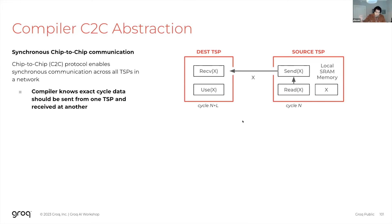A useful compiler abstraction for chip-to-chip (C2C) communication is that when we send from the source chip at cycle N to the destination chip, we will receive that vector at cycle N plus L, where L is a known transmission latency. The compiler also knows the channel throughput and how to pace the transmission of consecutive vectors.